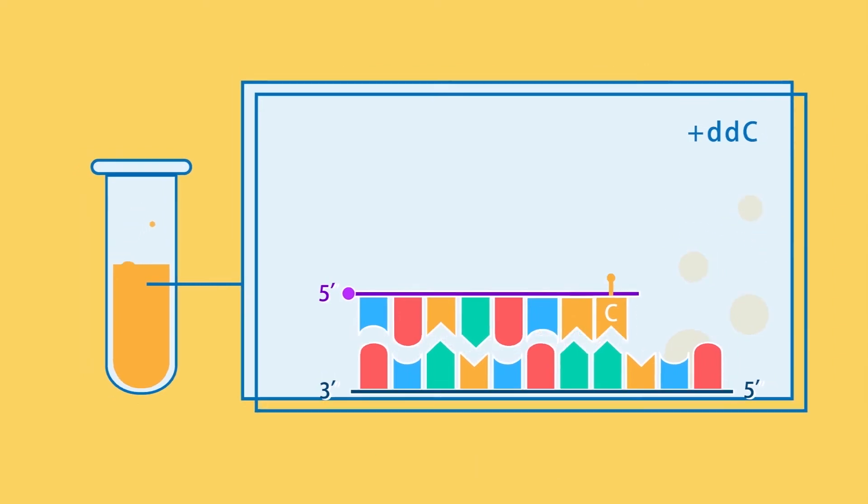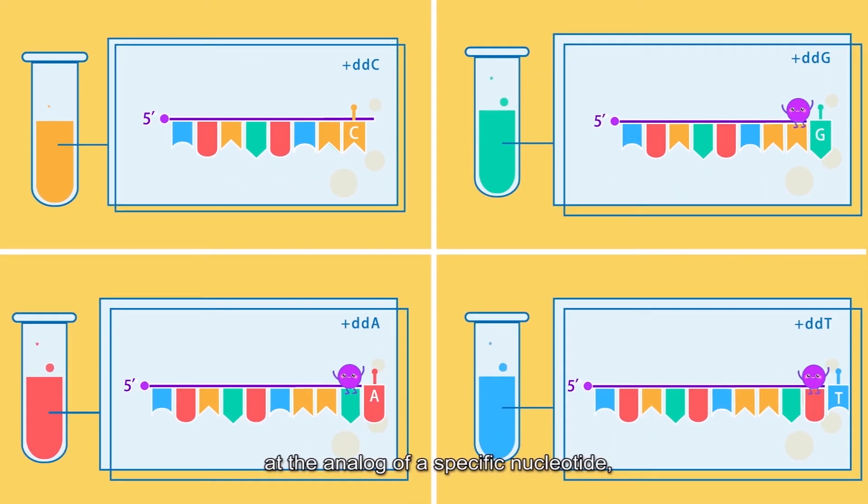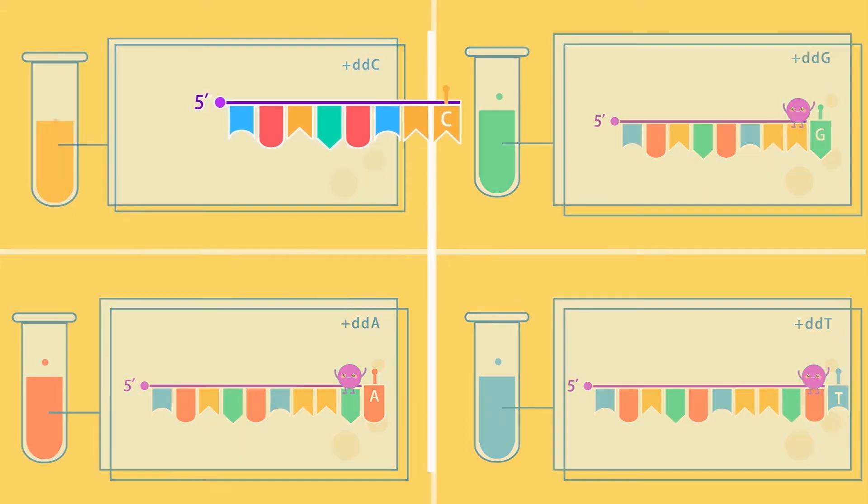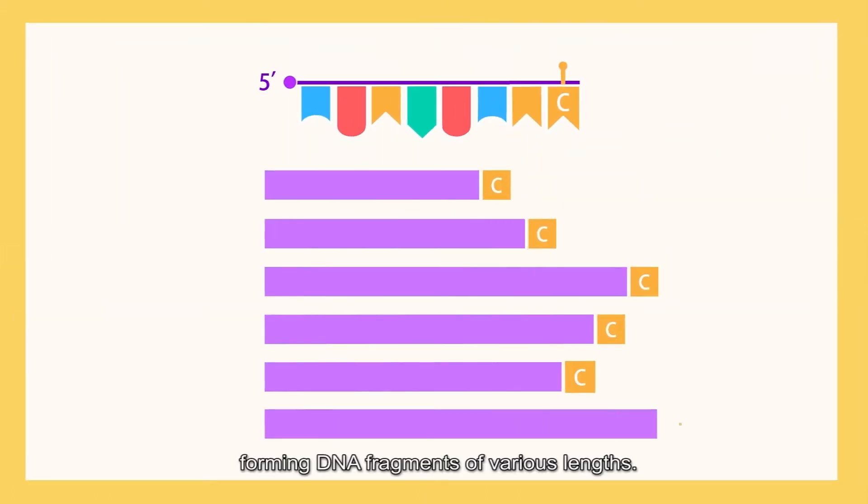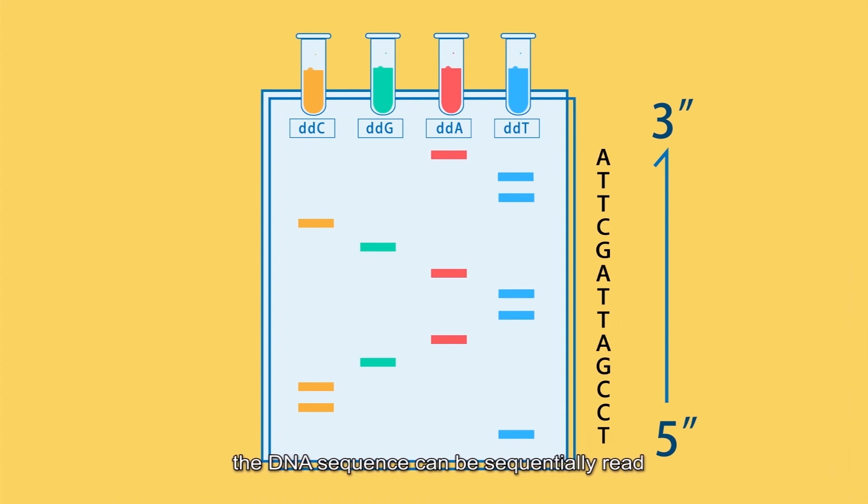According to this principle, some synthetic reactions will terminate at the analog of a specific nucleotide, forming DNA fragments of various lengths. Using gel electrophoresis for separation, the DNA sequence can be sequentially read from gel bottom to top.